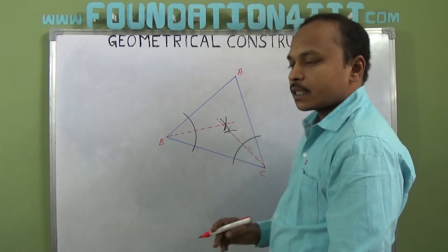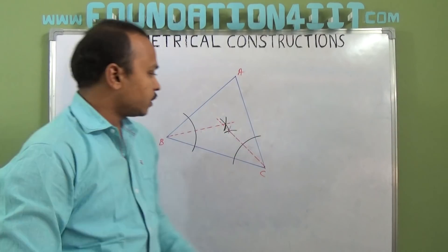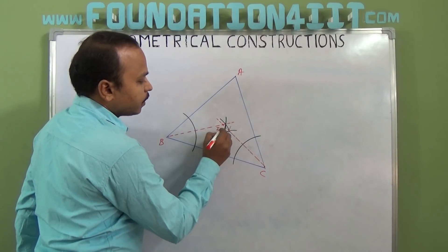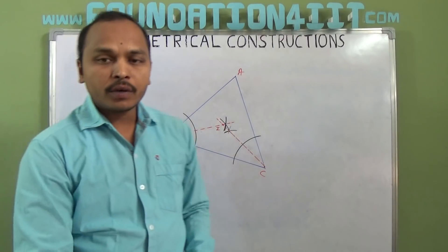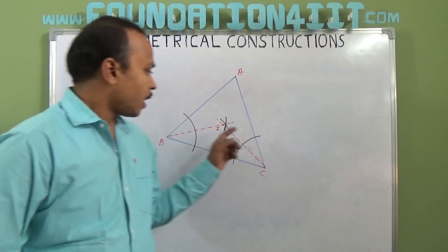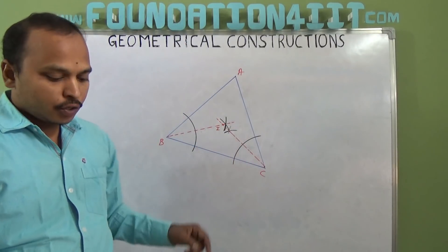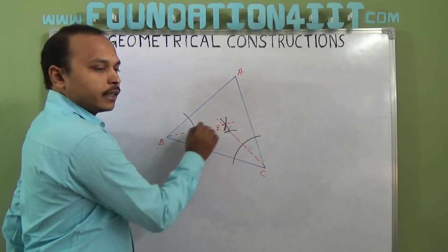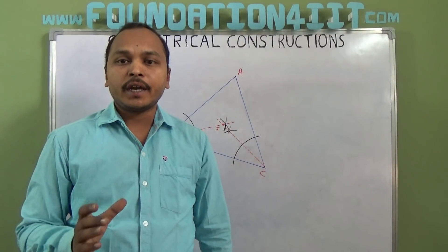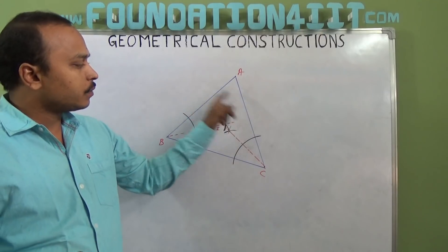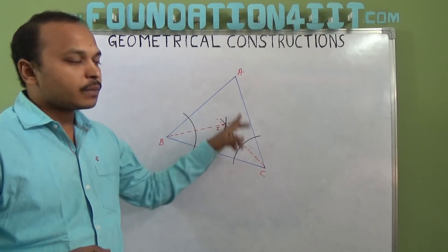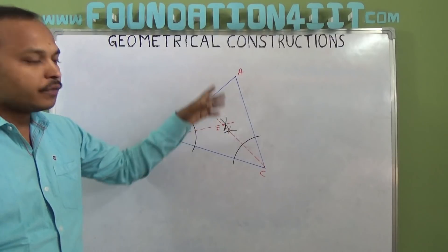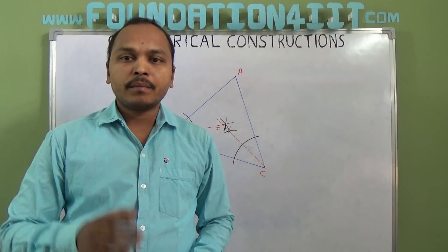After bisecting two angles, where the two line segments join, that point is the incenter — let's call it I. Now, with the incenter as center, we need to draw a perpendicular line to one side to find the radius. The radius is the equal distance from I to all three sides, but we need to locate exactly where that point is on the side.